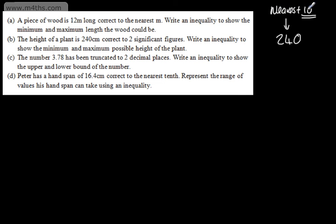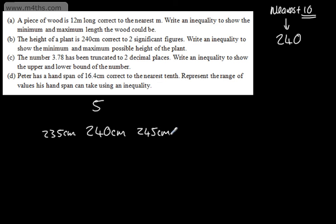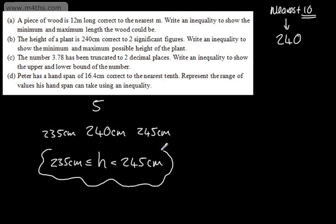We need to split 10, which gives us 5. So for 240 centimetres, to find the lower bound we take 5 off, giving 235 centimetres, and to find the upper bound we add it on, giving 245 centimetres. So we write the inequality: H is greater than or equal to 235 cm, yet strictly less than 245 cm.